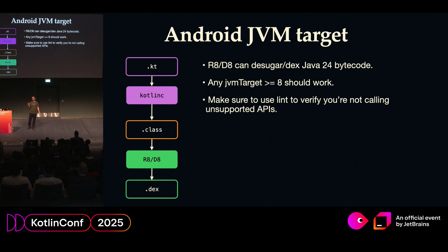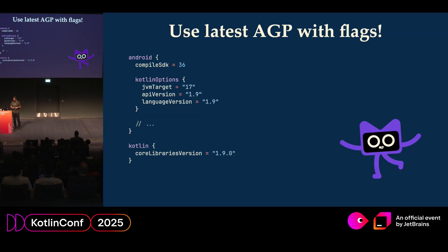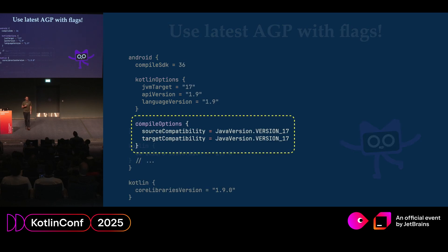In all cases, you should make sure to use Lint to catch any missing symbols. If you attended Orima's talk earlier today, he has a very good explanation of why removeFirst can become an issue on recent Android devices. Fourth recommendation: always use the latest AGP with flags.